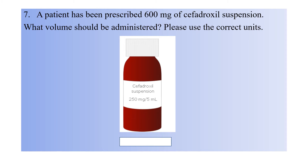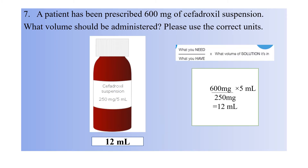Question seven: a patient has been prescribed 600 mg of erythromycin suspension. What volume should be administered? Please use the correct units. The correct answer is 12 mL. Use the formula: what you need divided by what you have, multiplied by the volume of solution. You need 600 mg and you have 250 mg in 5 mL. Calculating this gives 12 mL.